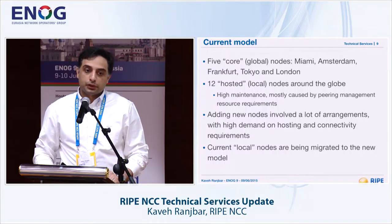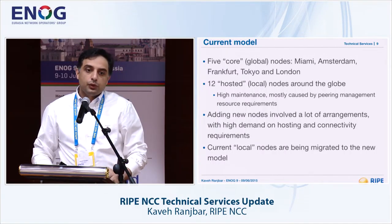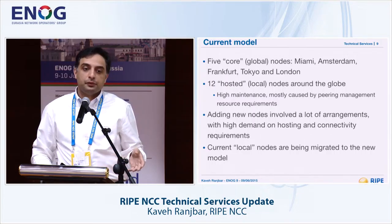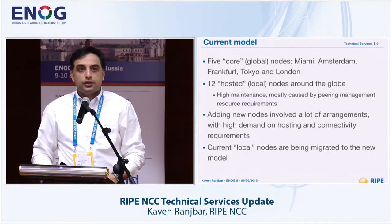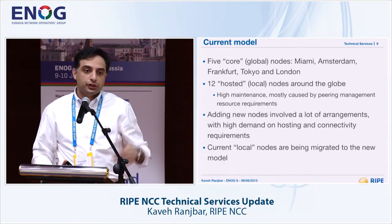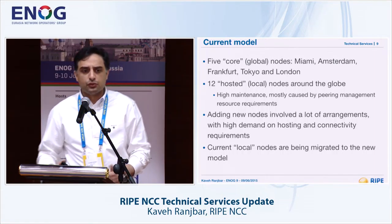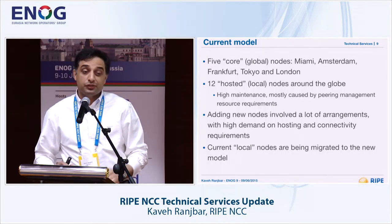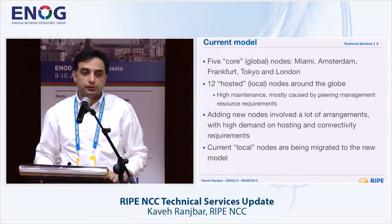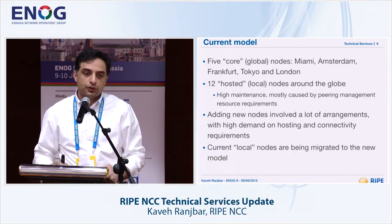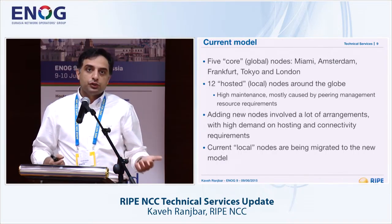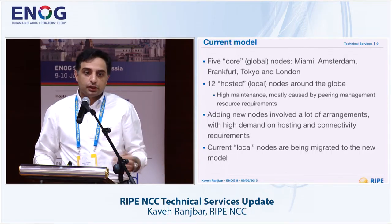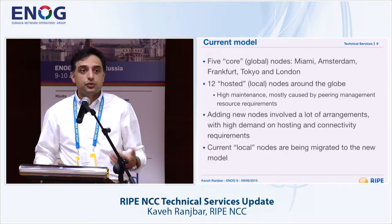We really want to expand our presence, especially in our service region. Historically, we ran five core nodes in Miami, Amsterdam, Frankfurt, Tokyo, and London — large machines taking more than half a rack with two routers, two switches, three servers. Very redundant, lots of bandwidth, open peering policy. We also had local nodes, for example in Russia, with switches, routers, and machines — smaller than the global ones. This involved a lot of work, hardware, space, bandwidth, and stability requirements from hosts, plus resources managing all the peerings.